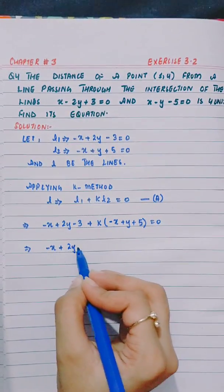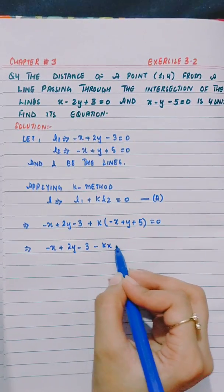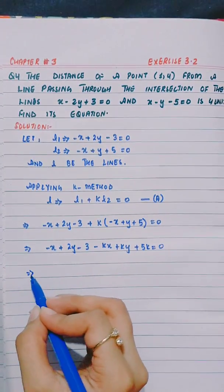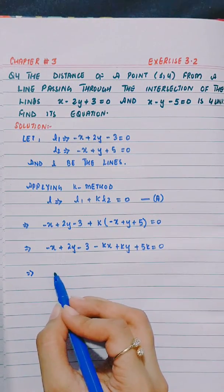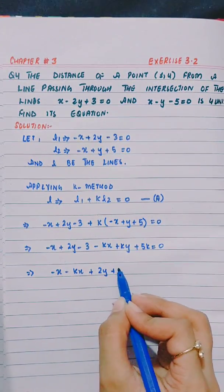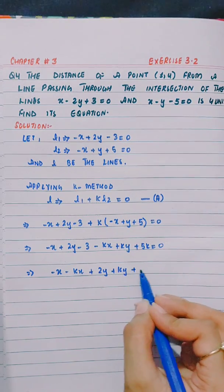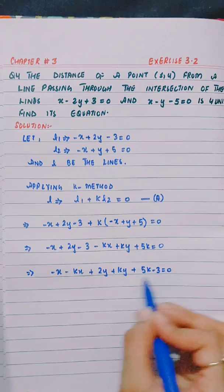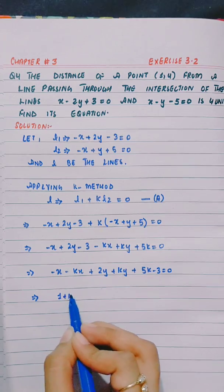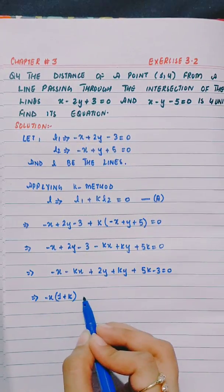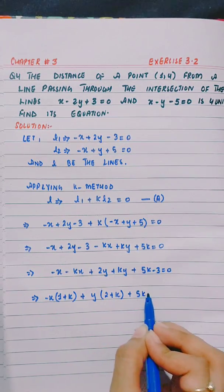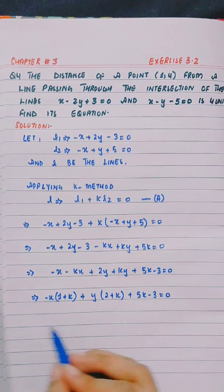Expanding: minus x plus 2y minus 3 minus kx plus ky plus 5k equals 0. Collecting terms: minus x minus kx plus 2y plus ky plus 5k minus 3 equals 0, which gives minus (1 plus k)x plus (2 plus k)y plus (5k minus 3) equals 0.